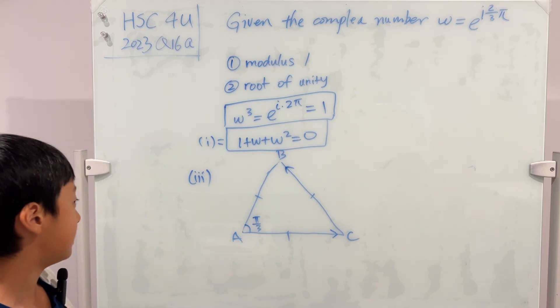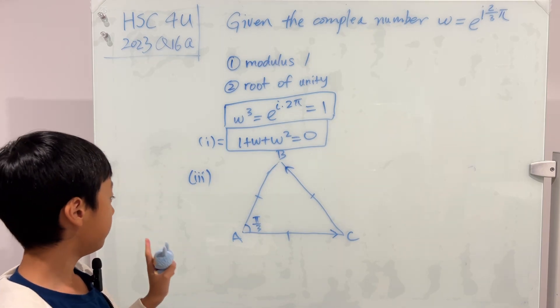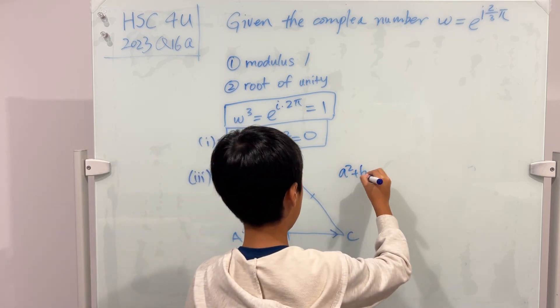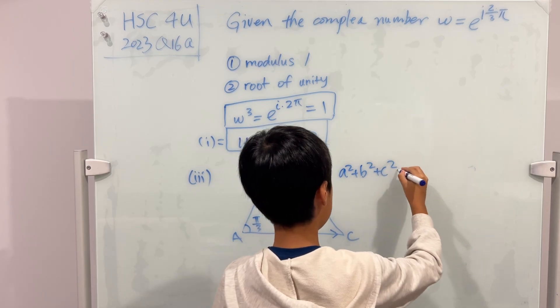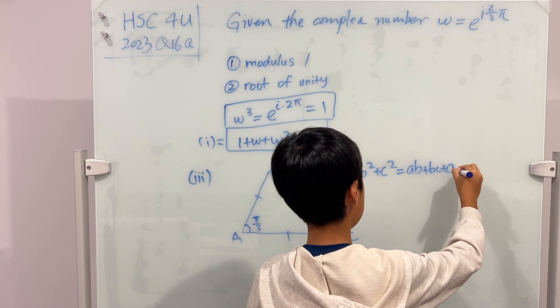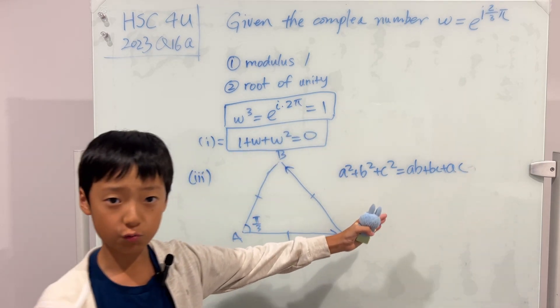And, another thing is that, another thing that they want you to prove is that a squared plus b squared plus c squared is equal to ab plus bc plus ac. Now, this might look really hard to prove, but it's actually really easy.